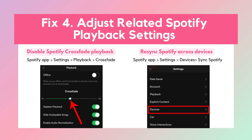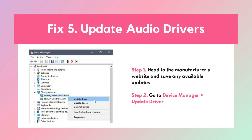Solution 4: Adjust related Spotify playback settings. Spotify settings like crossfade playback or sync settings can sometimes interfere with smooth playback. Turn off crossfade in your Spotify settings and re-sync your device to help fix playback disruptions.